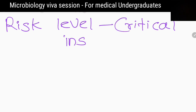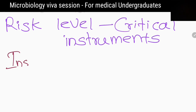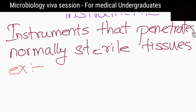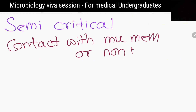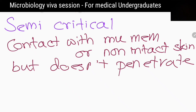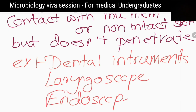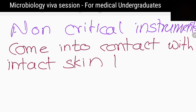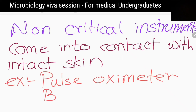When considering the risk, what are critical instruments? Instruments that penetrate normal sterile tissues and spaces. Give me an example. Surgical instruments. Classify other instruments according to risk. Instruments that contact mucous membranes or non-intact skin are called semi-critical instruments — for example, dental instruments, laryngoscopes, and endoscopes. Instruments that come into contact with intact skin, like pulse oximeters, blood pressure cuffs, and thermometers, are called non-critical instruments.